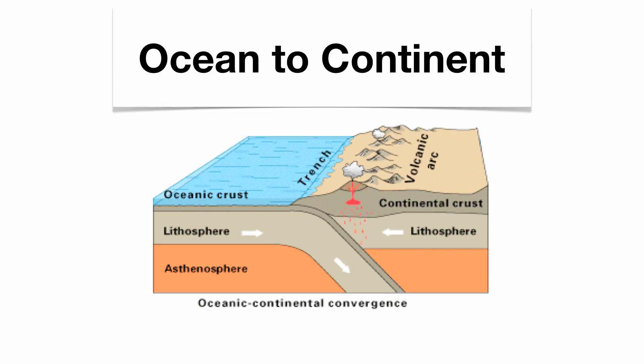In ocean-to-continent convergence, convection cells are going to cause the oceanic crust on the left and the continental crust on the right to collide with each other. Because of the density differences, your oceanic crust is going to move underneath your continental crust and plunge into the earth — that's what we call subduction. During subduction, there's a tremendous amount of friction, so you're going to get very strong earthquakes. As that plate gets deeper, it gets hotter and eventually starts to melt. The magma is forced to the surface, producing a mountain range that runs parallel with the coastline, some of those peaks volcanic. Where those two plates interact is what we call a trench.